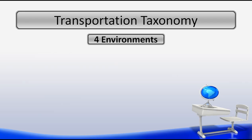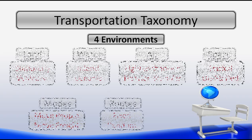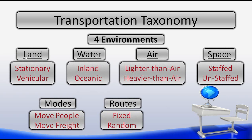A quick review of our Transportation Taxonomy: our four environments are land, water, air, and space. Each of these environments has two subcategories or two subsystems. In land, we have stationary and vehicular. In water, we have inland and oceanic. In air, we have lighter than air and heavier than air, and staffed and unstaffed in our space environment. Our two modes are we either move people or freight, or we move both. And the routes we apply our transportation to include fixed and random.